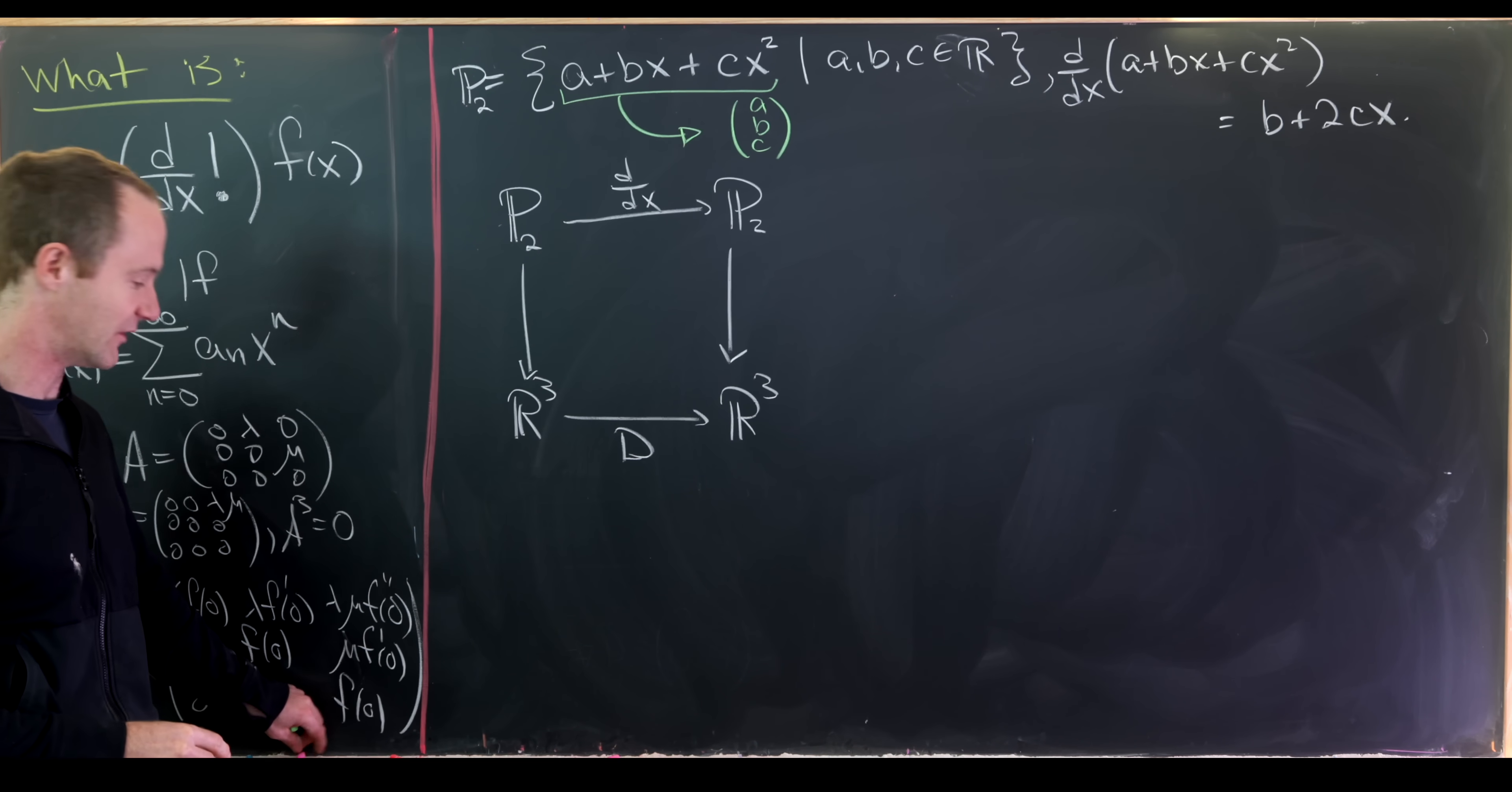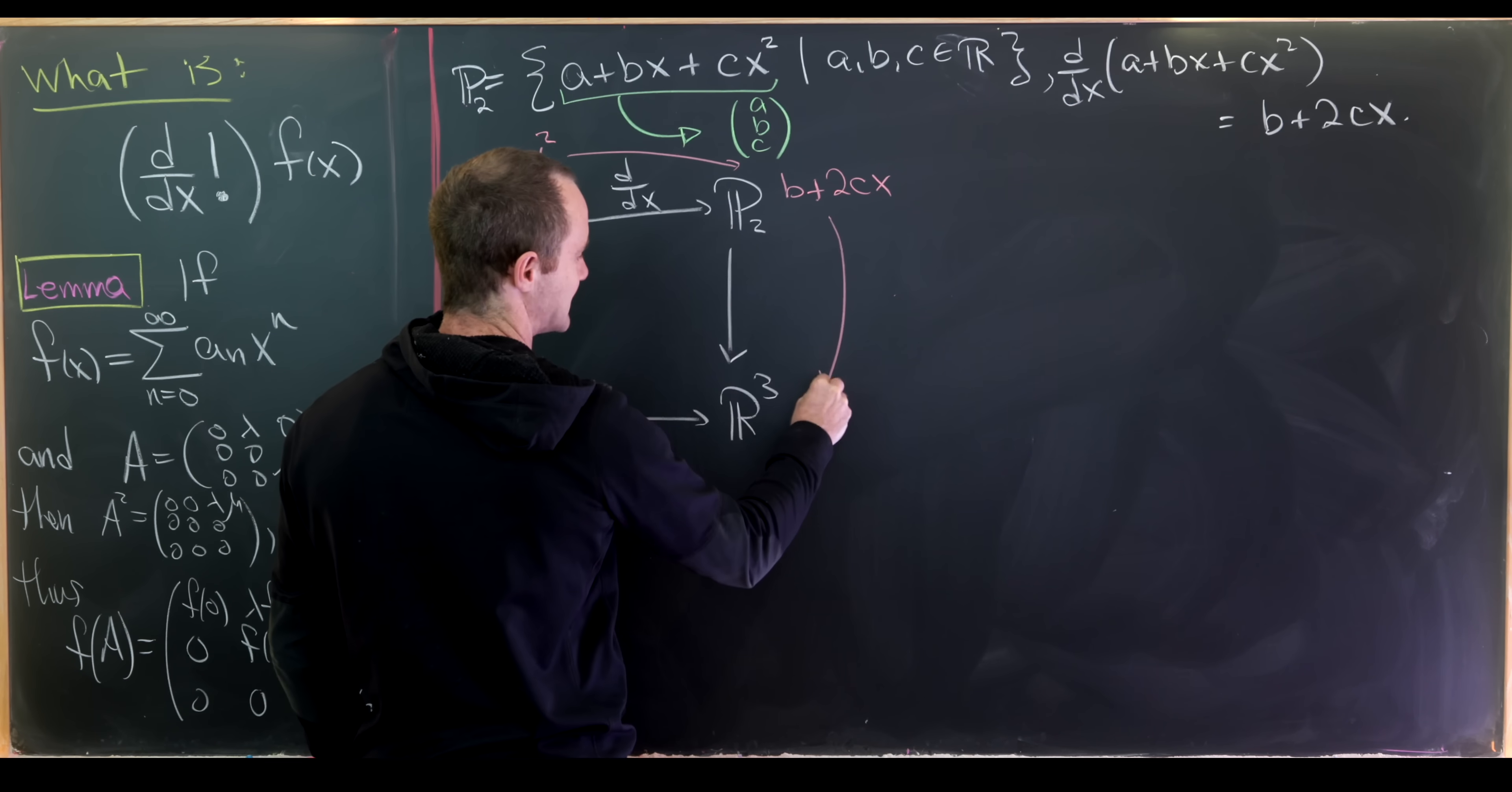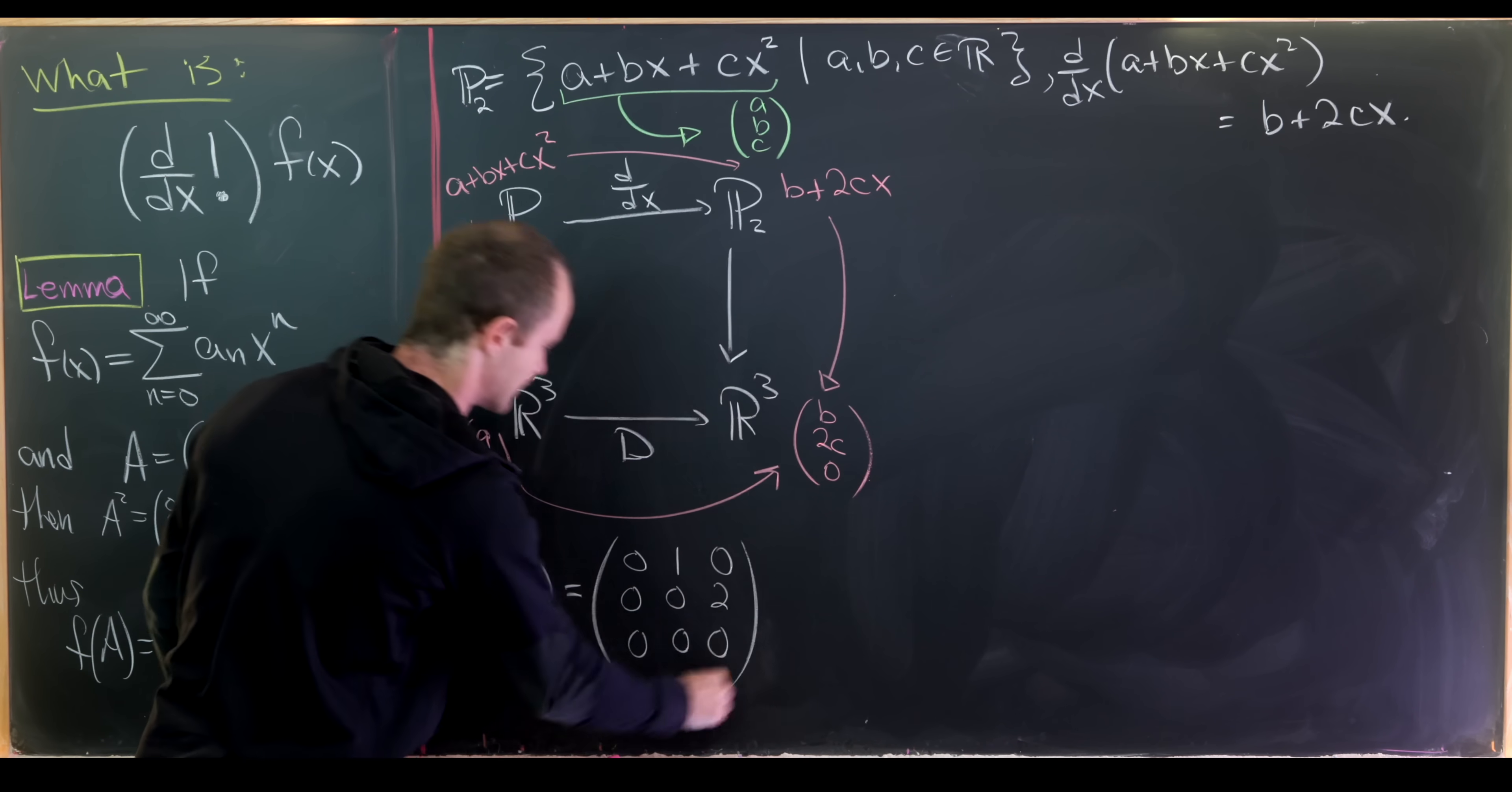So this will also go to R³ and then we'll map down as well. Let's trace an element through so we have a feel for how this works. So let's take a polynomial, that'll be a plus bx plus cx squared. Mapped down here will give us this vector a, b, c. Mapped over here with the derivative gives us b plus 2cx, and then that mapped down here will go to b, 2c, 0. So now seeing that a, b, c gets mapped to b, 2c, 0 gives us a formula for D. And that formula for D goes like this: it should be 0, 1, 0, 0, 0, 2, and then 0, 0, 0.